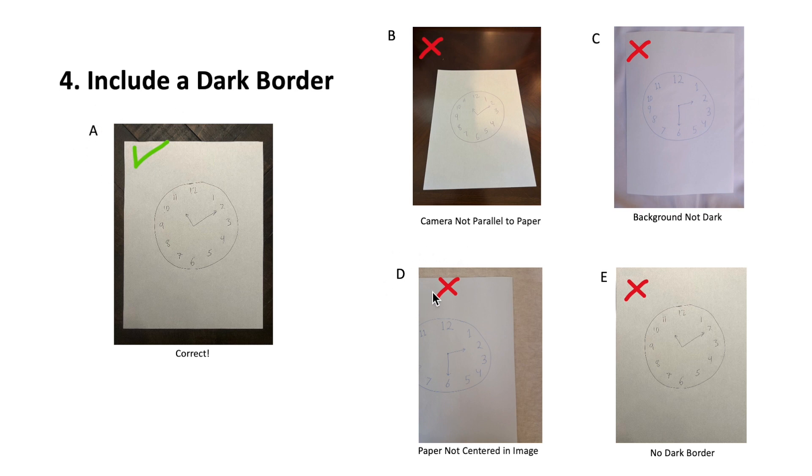Panel D shows the mistake of not centering the paper in the middle of the image, and panel E shows the mistake of forgetting to include a border. Remember, a correct clock image should look like panel A.